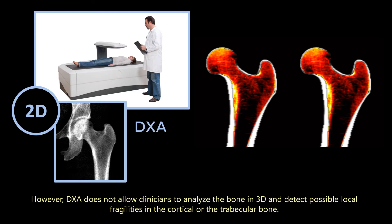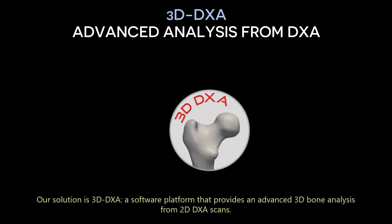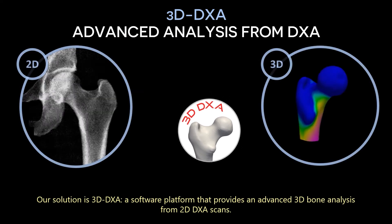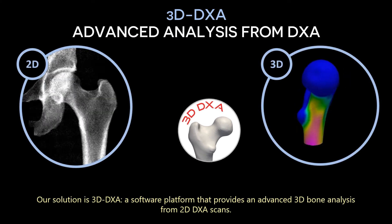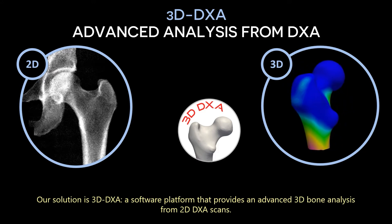However, DEXA does not allow clinicians to analyze the bone in 3D and detect possible local fragilities in the cortical or the trabecular bone. Our solution is 3D DEXA, a software platform that provides an advanced 3D bone analysis from 2D DEXA scans.